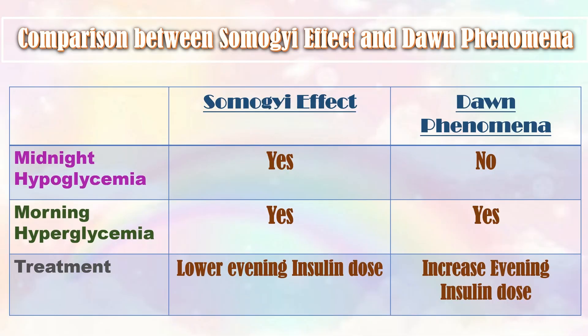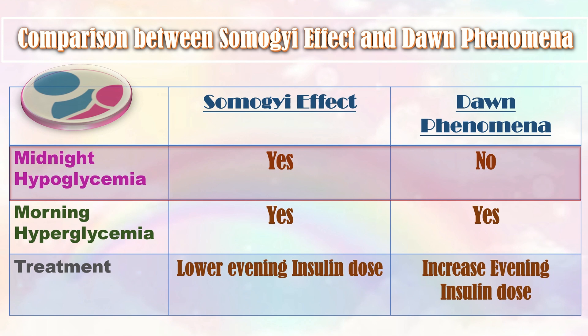This table beautifully explains the difference between Somogyi effect and dawn phenomena. Midnight hypoglycemia is observed in Somogyi effect but not in dawn phenomena. Morning hyperglycemia after midnight hypoglycemia is present in Somogyi effect but not in dawn phenomena. In Somogyi effect, the treatment is to lower the evening insulin dose; in dawn phenomena, we need to increase the evening insulin dose.